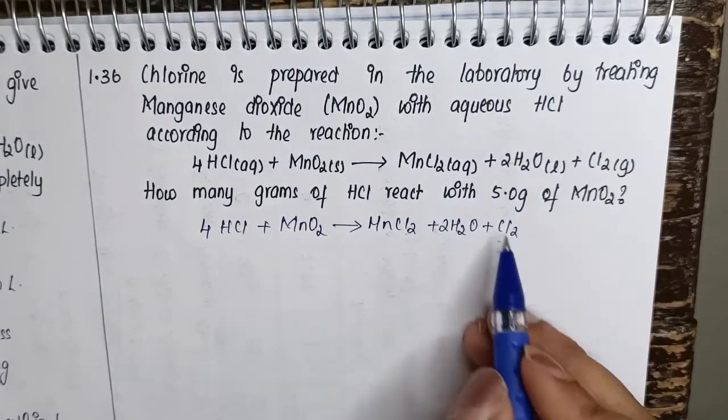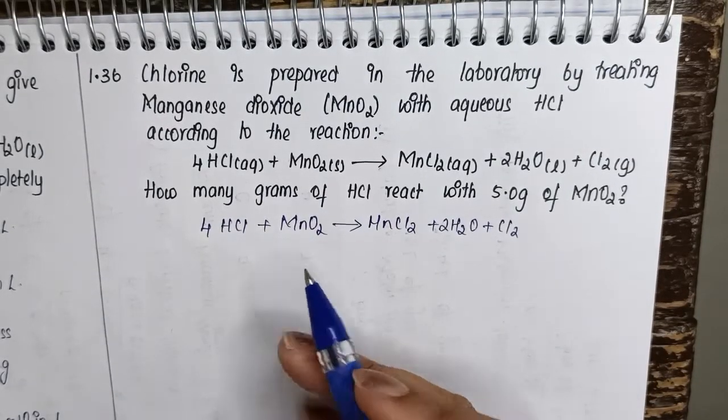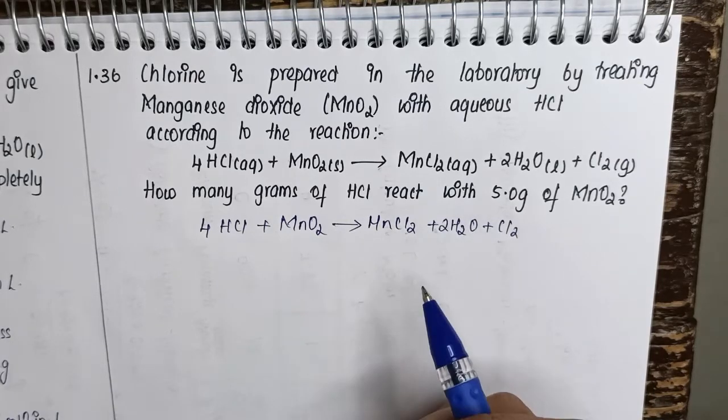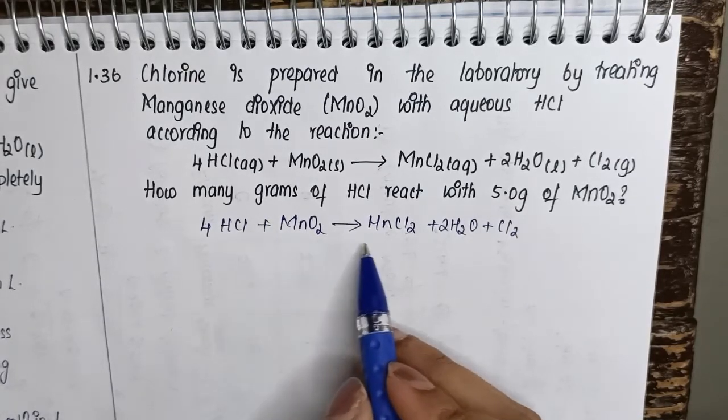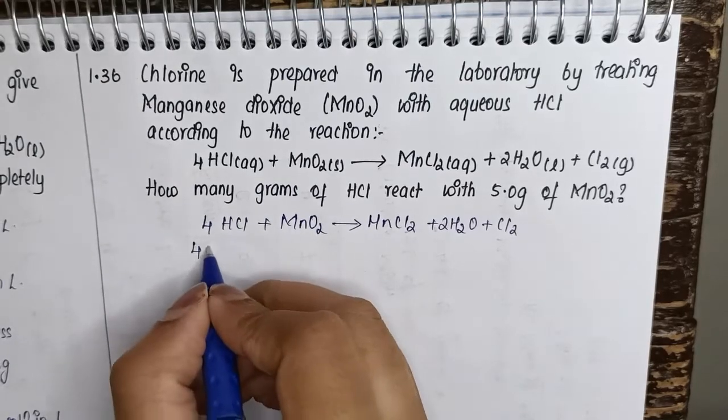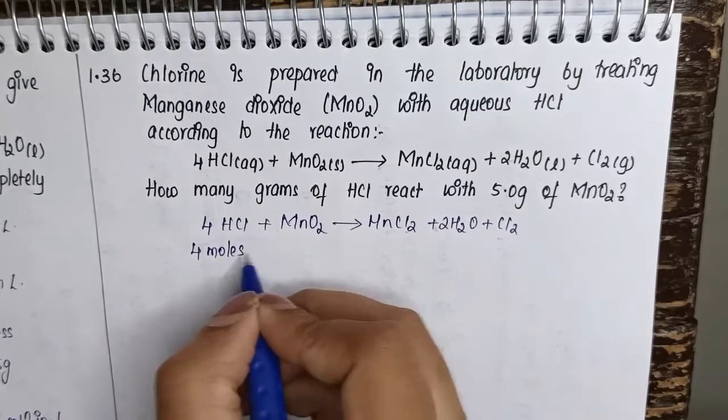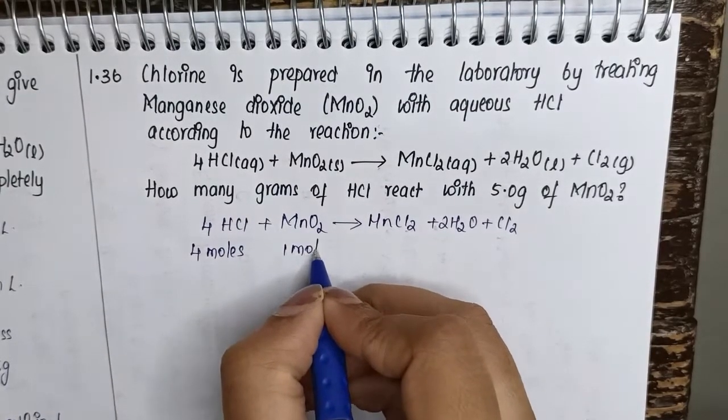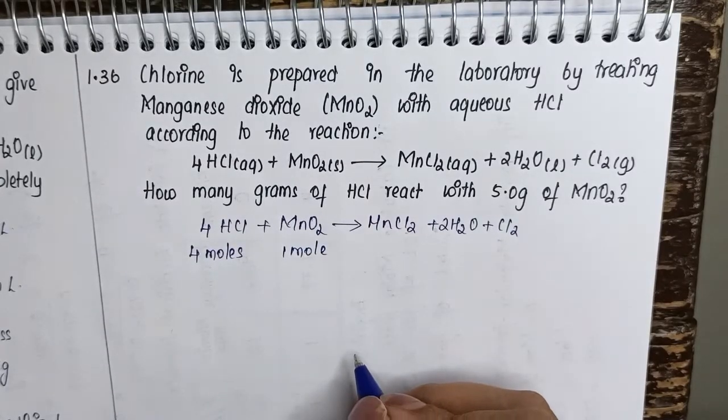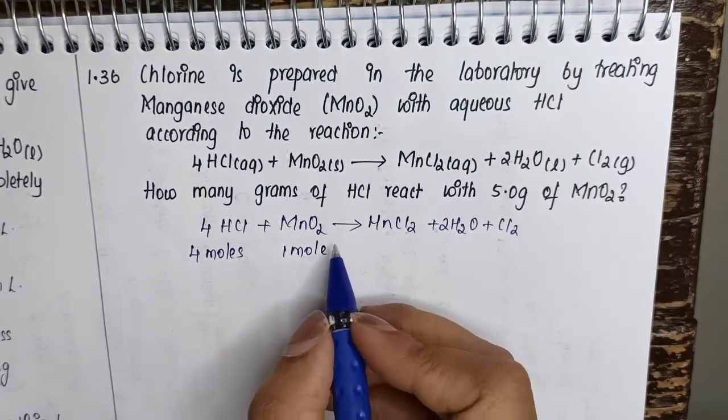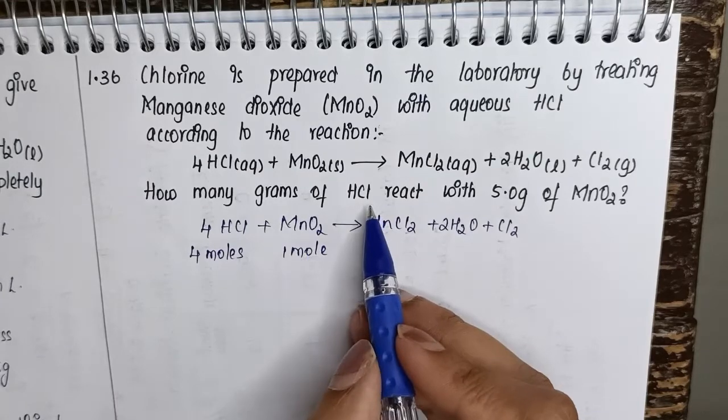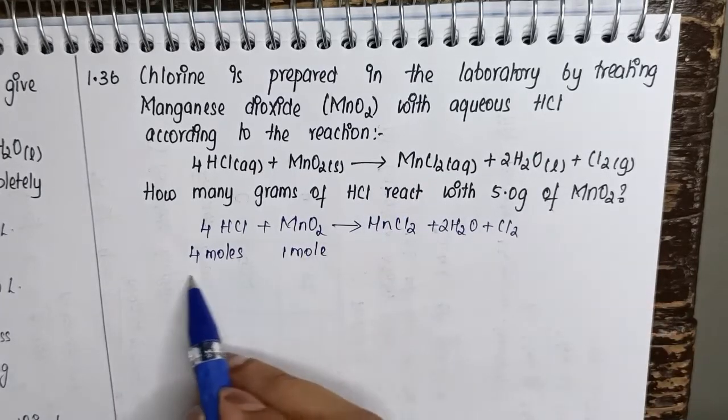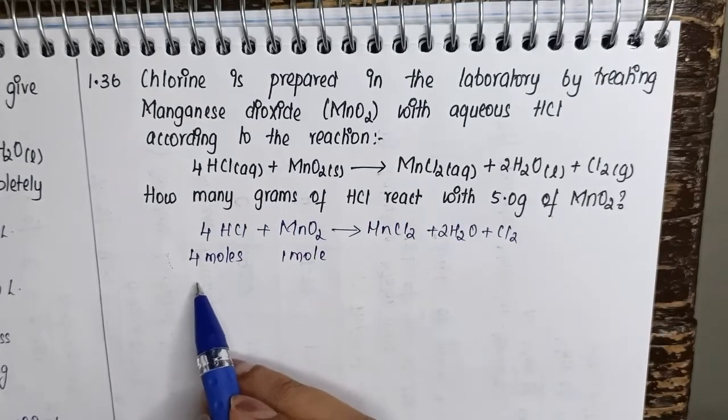Now from this equation we need to derive some information. So as per this equation given to us, 4 moles of HCl are there which will react with 1 mole of MnO2. Now in this case, since your question is asked with respect to reactants, we will only stick to information with respect to reactants.